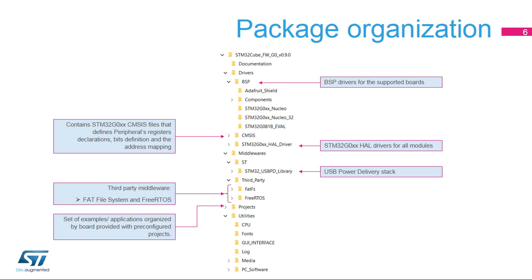The CMSIS folder contains the files defining STM32G0-XX supported devices, peripheral register declarations, their associated bit definitions, and address mapping. The STM32G0-XX HAL driver folder contains the drivers for all the peripherals. The drivers for all supported boards are found in the BSP folder.